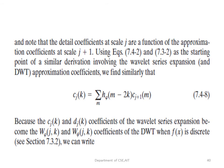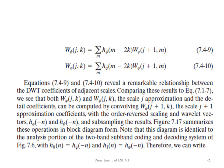The detail coefficients at scale j are functions of the approximation coefficients at scale j+1. Using the wavelet series expansion as a starting point, we similarly get the approximation coefficient: C(j,k) = Σ h_φ(n) C(j+1, 2k+n). The C(j,k) and D(j,k) coefficients of the wavelet series expansion become the W_φ and W_ψ coefficients of the DWT when f(x) is discrete.